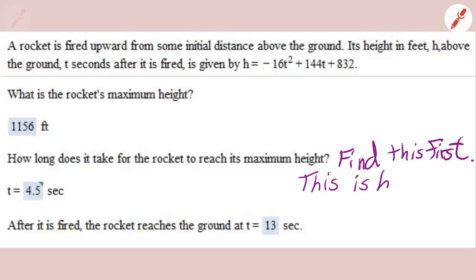Again we have to find k. That's the maximum height but before you can find k you have to find h. h is the amount of time it takes for the rocket to reach its maximum height. So if you find h first you find out it's 4.5 by using our favorite formula h equals negative b divided by 2a.